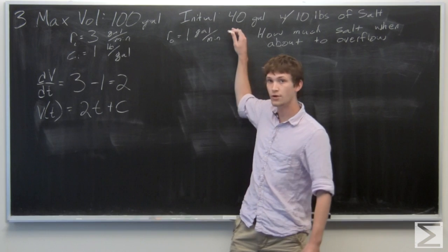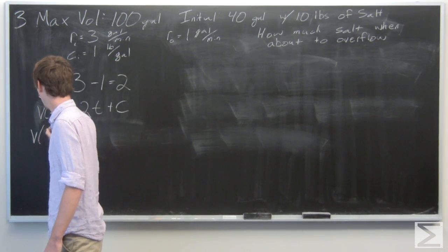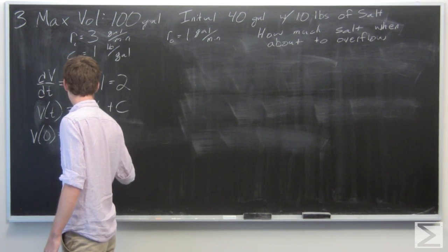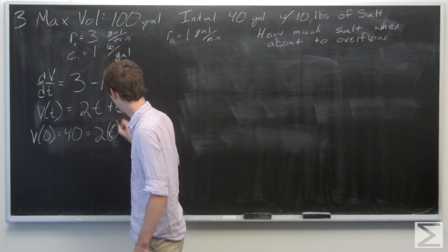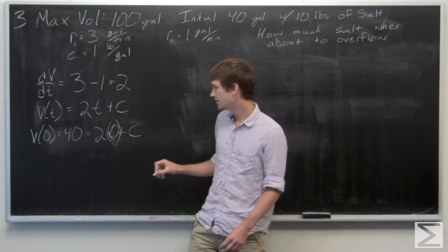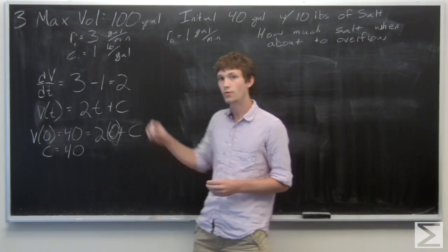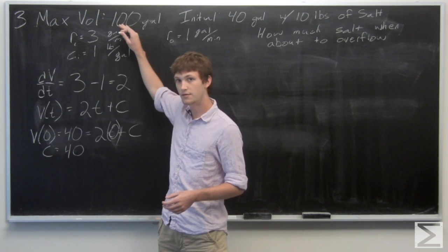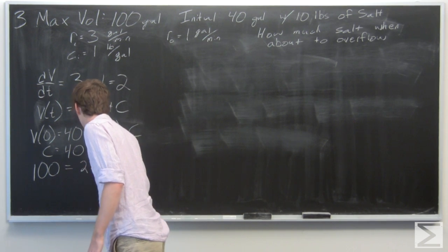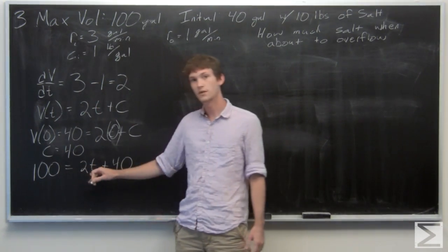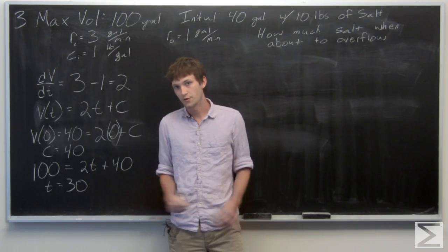We know that initially there are 40 gallons in the tank, so V(0) = 40, which lets us solve for C. We get 40 = 2(0) + C, so C = 40. We also need to know when the tank is full. Since the full volume is 100 gallons, we solve and find that after 30 minutes the tank will be full.